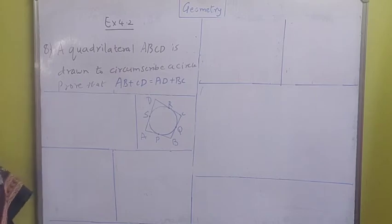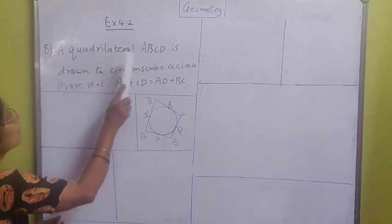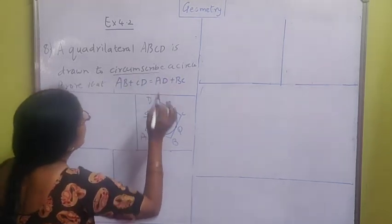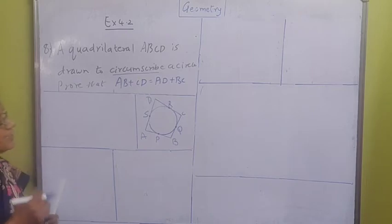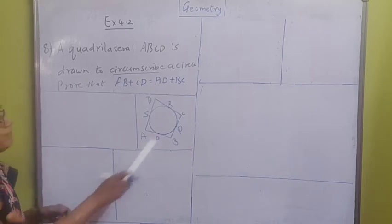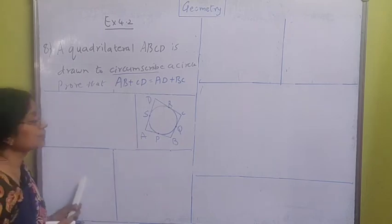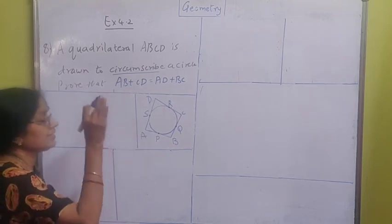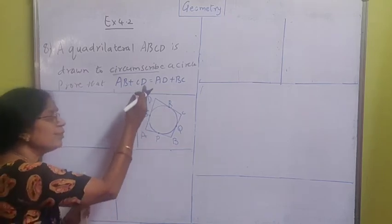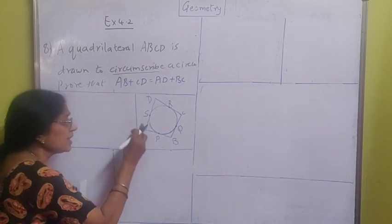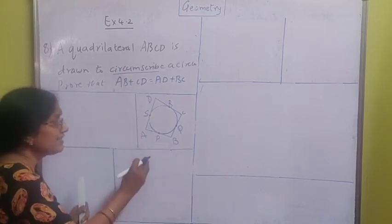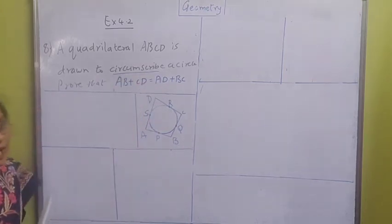Let us see sum number 8. What is given in sum number 8? A quadrilateral ABCD is drawn to circumscribe a circle. Prove that AB + CD = AD + BC. Circumscribe means the quadrilateral should be drawn to a circle in such a way that the sides of the quadrilateral should touch the circle at one point each - meaning the sides of the quadrilateral should become tangents to the circle. It is called circumscribed.